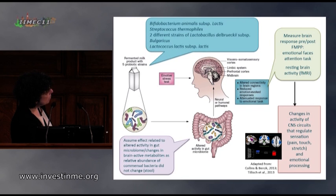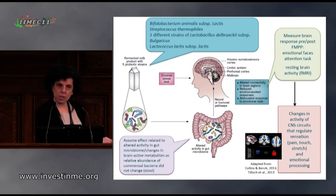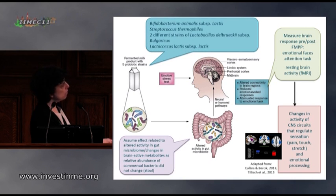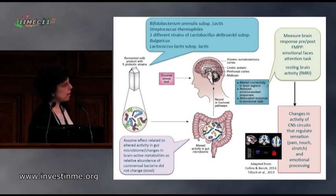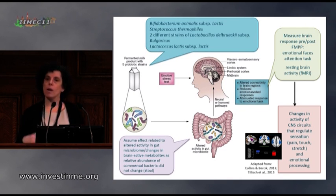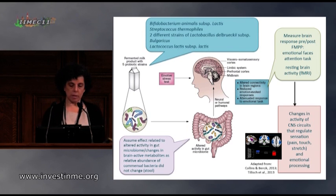Using functional brain imaging, they demonstrated changes in the sensation-transmitting areas of the brain — areas that transmit pain, touch, and stretch — as well as emotional processing. These were correlated with improvements in emotional response. So we have a lot to answer yet, and also a lot to perhaps reinterpret.